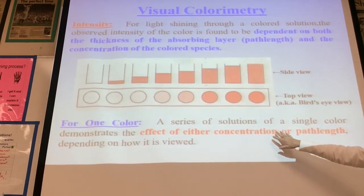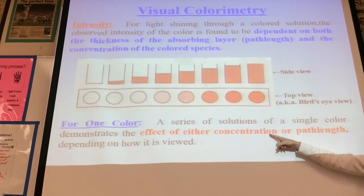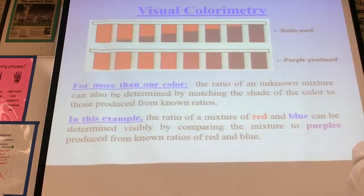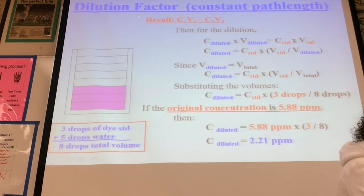If you only have one color, it's pretty straightforward. If you have a single color, it demonstrates the effect of either concentration or path length. Typically, we're going to be calculating concentration based on the absorbance. If you have more than one color, it's far more complicated. You've got to do a double comparison. You know that purple comes from red and blue, so you can look at red and look at blue and sort of blend them together. I'll show you that.